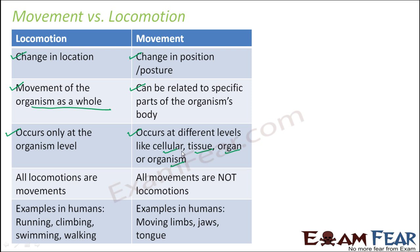If you talk about the tissue level, for example, inside the body, the heart is moving. That means the tissue and the cells involved with the heart are also involved in the beating of the heart — they are also moving. The heart beats because the cells which form the heart are contractile, meaning they are capable of contraction and expansion. So at the cellular level also, movement takes place. Movement can occur at many different levels.